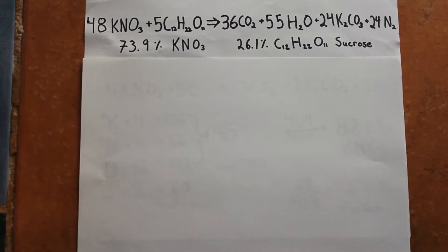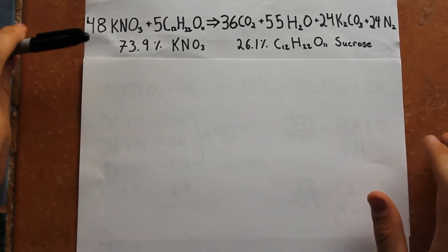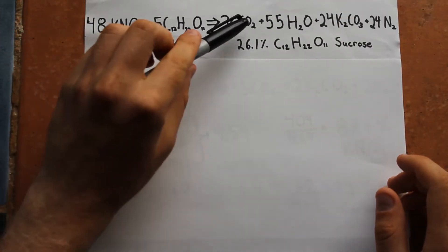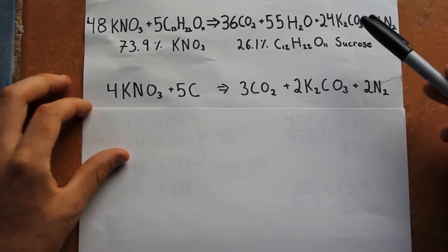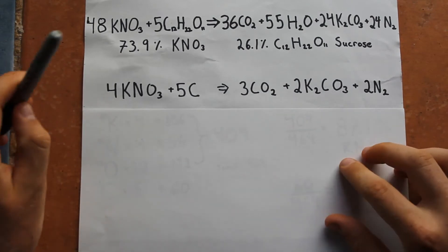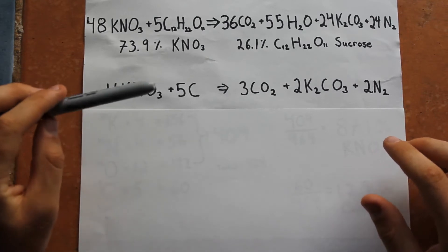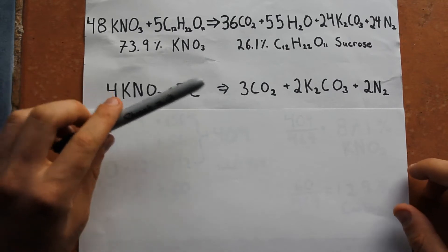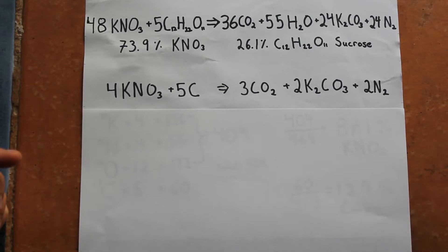What I've found is that 70% is about the upper limit for the potassium nitrate. Using the same reaction — the same end products with KNO3 and just carbon — there's CO2, and there's no H2O in this reaction because there's no hydrogen coming in, and then potassium carbonate, and nitrogen. The reaction has four molecules of potassium nitrate to five individual atoms of carbon, resulting in CO2, potassium carbonate, and nitrogen.